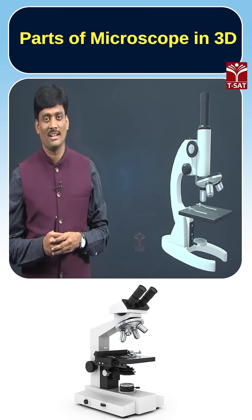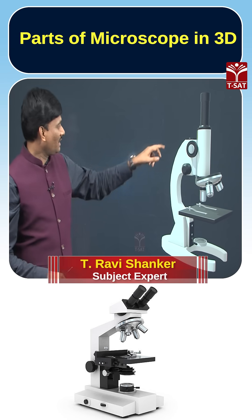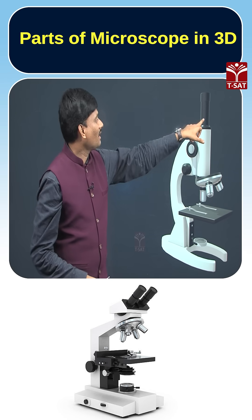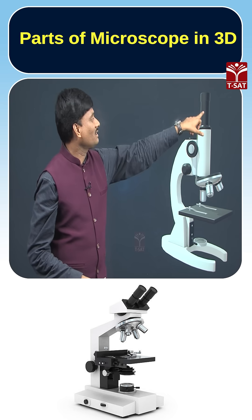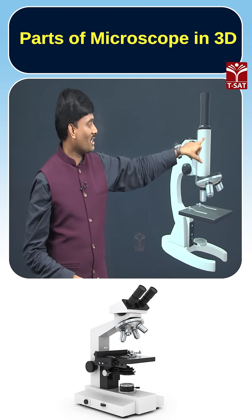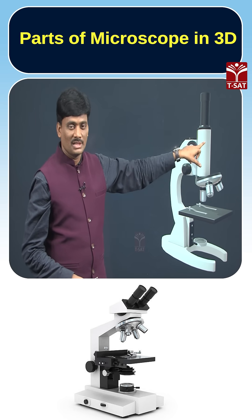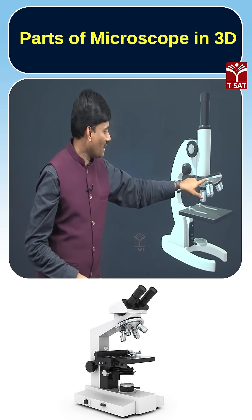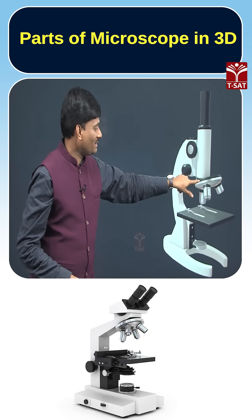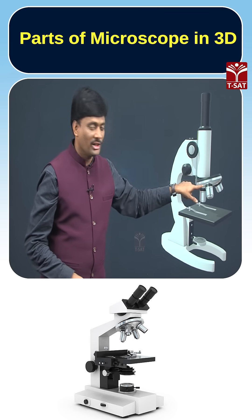The parts that are present in a microscope: here you can see the eye lens or eyepiece, and then it is called the body tube. Next, here we have the revolving nosepiece.